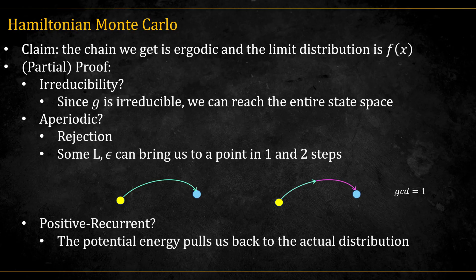Positive recurrence: The potential energy keeps the dynamics confined to regions where f of x is non-negligible. In other words, the system can't drift to infinity, but is pulled back towards the target distribution, ensuring recurrence. Taken together, these properties give us the intuition that the chain is indeed ergodic.